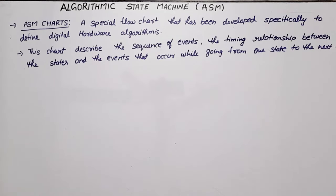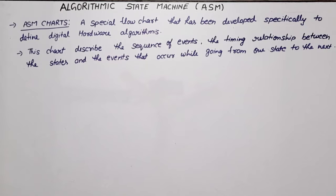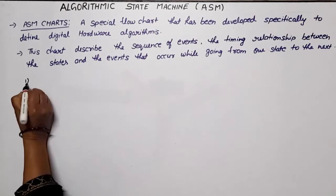Hello everyone. In this video lecture of digital system design or digital electronics, I am going to discuss ASM. ASM stands for Algorithmic State Machine. This is used for designing the synchronous sequential circuit. This is basically an advanced version of state diagram. If your state diagram is given for a sequential circuit, you can design the circuit. In this video, I will discuss the main elements of ASM and one or two examples of ASM — how to draw an ASM chart if your state diagram is given.